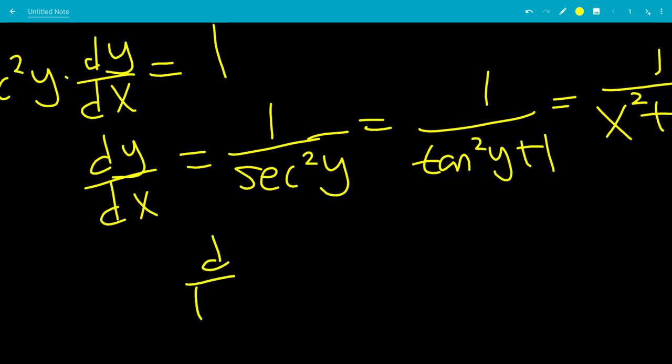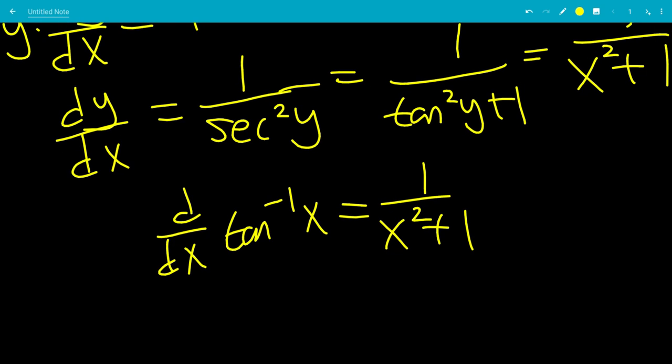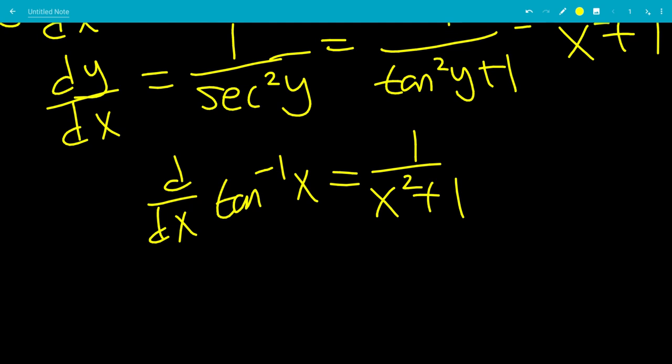So, that's the derivative of inverse tangent of x, which we just found is 1 over x squared plus 1, 1 over x squared plus 1.